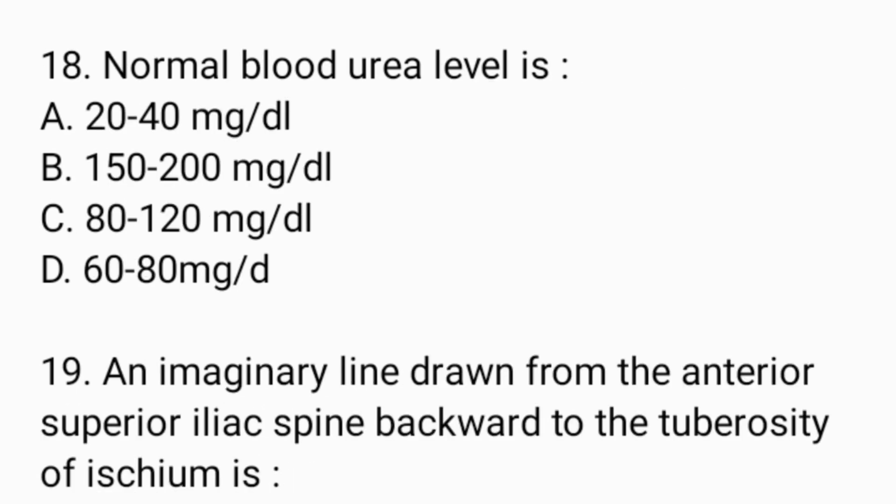Next question: Normal blood urea level is — Option A: 20 to 40 mg per dL. Option B: 150 to 200 mg per dL. Option C: 80 to 120 mg per dL. Option D: 60 to 80 mg per dL. And the answer is 20 to 40 mg per deciliter.